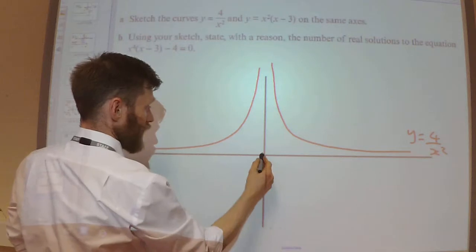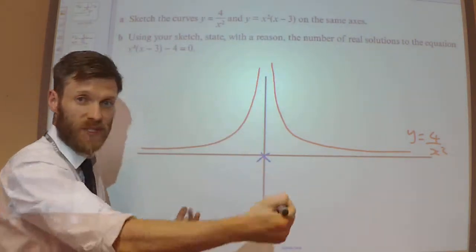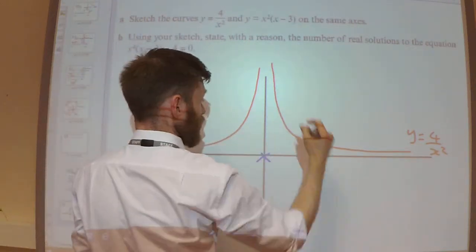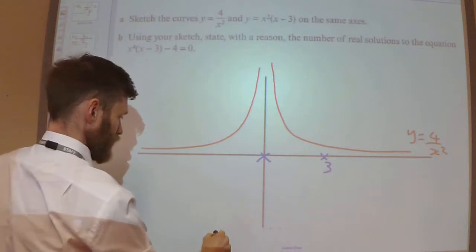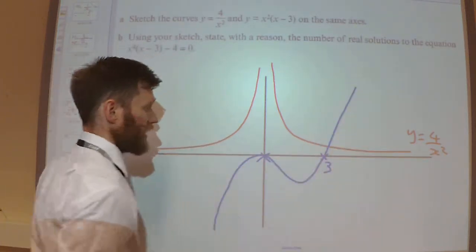So this is a cubic. It's got a repeated root here. It's going to be a positive. If I was to expand this out, I'd have a positive x³. So I know it goes up, back down. It's going to cut through at 3. It's going to get up here. Repeated root, so back down. It'll look something like that.